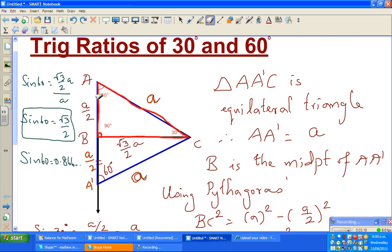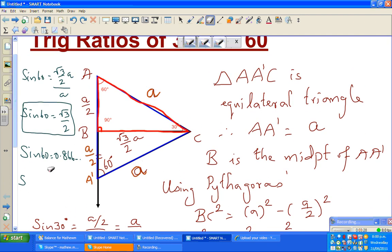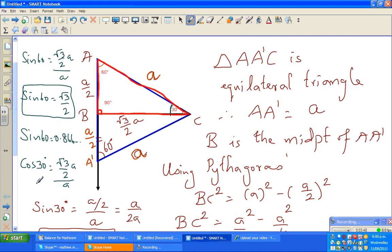We have done sin 30° and 60°. So now we have to do cos 30°. For angle 30°, this is adjacent and this is hypotenuse. So that will be the same value: √3/2 times A over A. So cos 30° would be the same number which is √3/2.